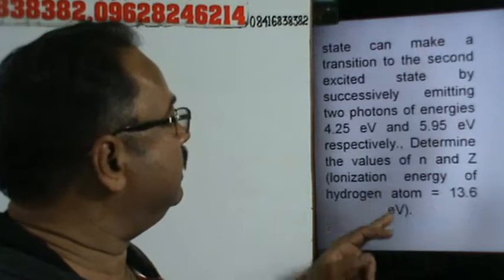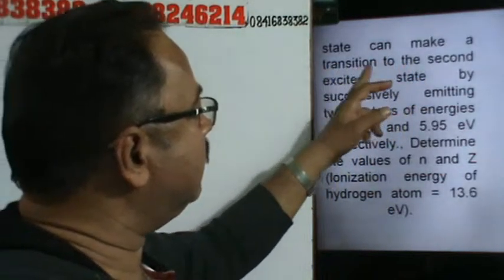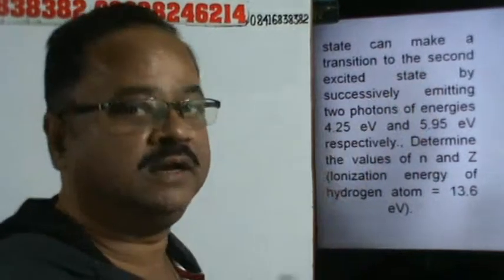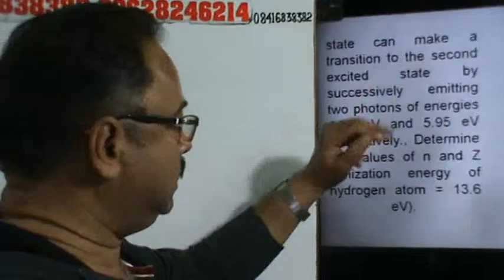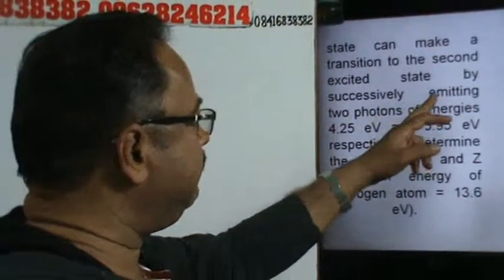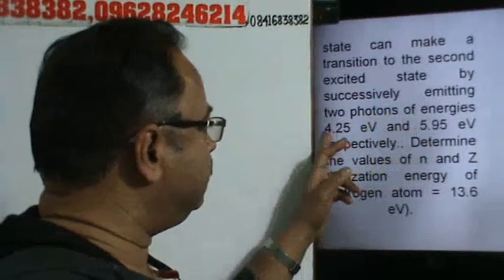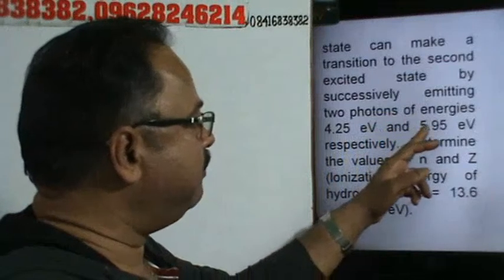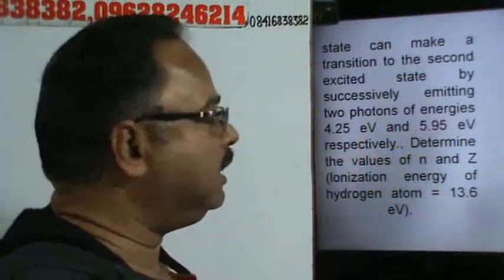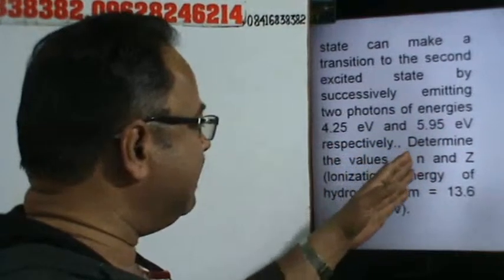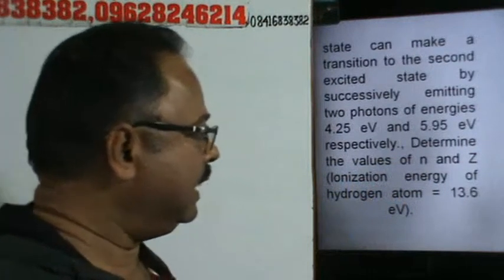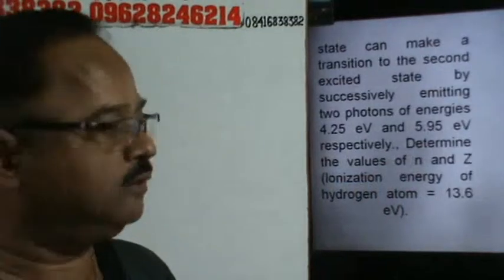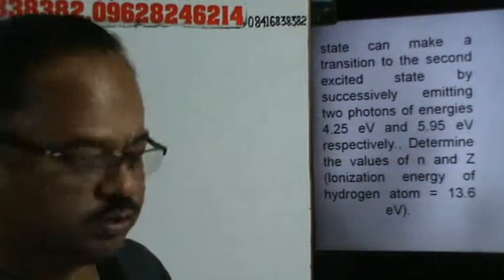Alternatively, the atom from the excited state can make a transition to the second excited state — second excited state means N equal to 3 — by successively emitting two photons of energy 4.25 electron volt and 5.95 electron volt respectively. Determine the value of N and Z. Ionization energy of hydrogen atom is equal to 13.6 electron volt.